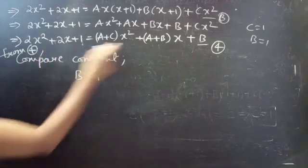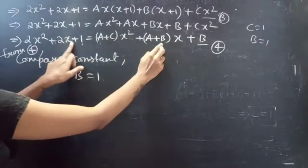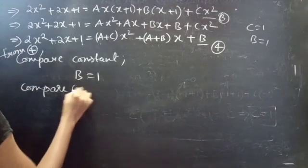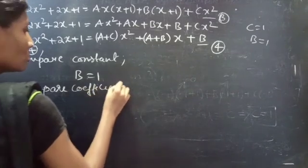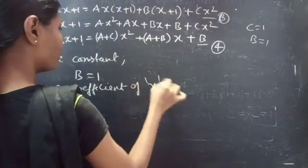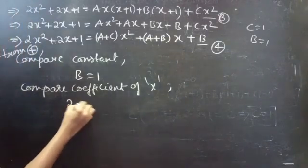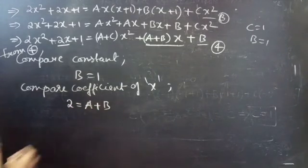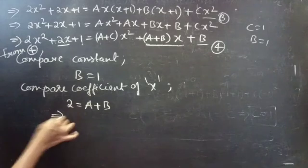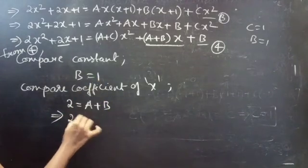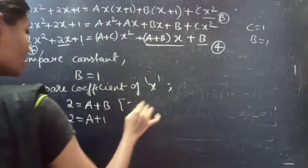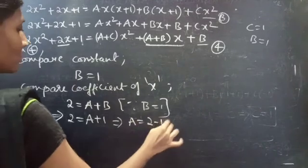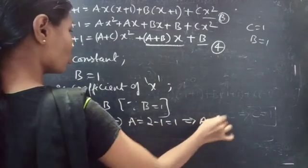Again from equation 4, compare the coefficients of x. You get 2 equals a plus b. Since b equals 1, substituting gives a equals 2 minus 1, which equals 1. So a equals 1.